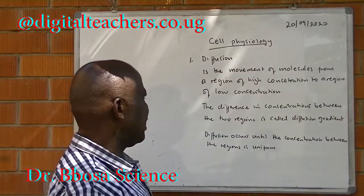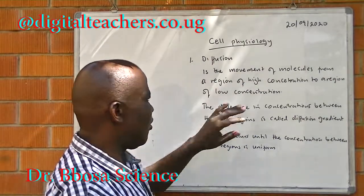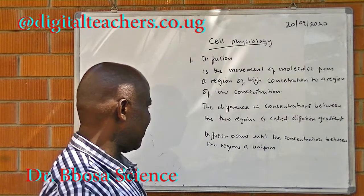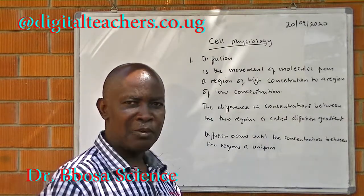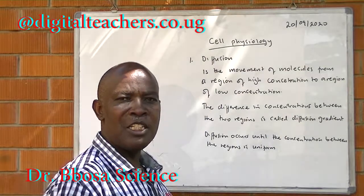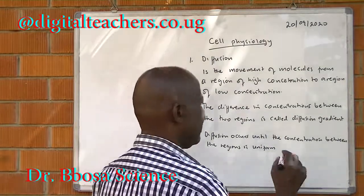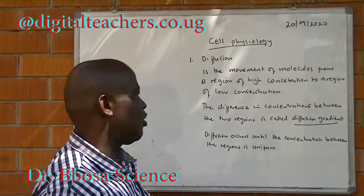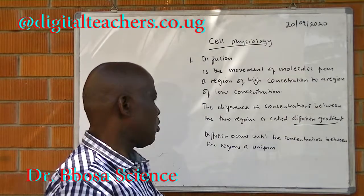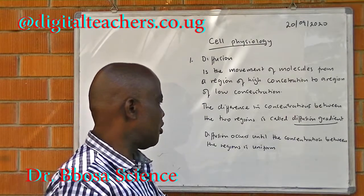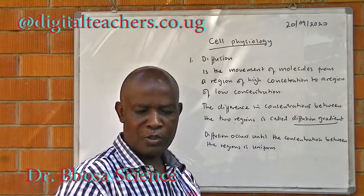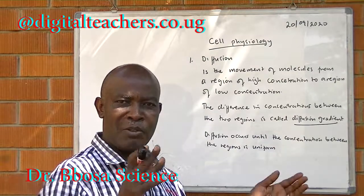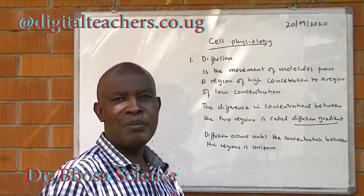One: diffusion is the movement of molecules from a region of high concentration to a region of low concentration. The difference in concentration between the two regions is called the diffusion gradient. Diffusion occurs until the concentration between the regions is uniform.